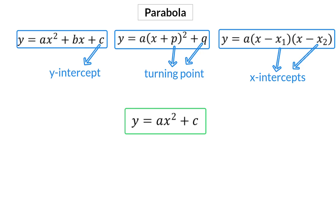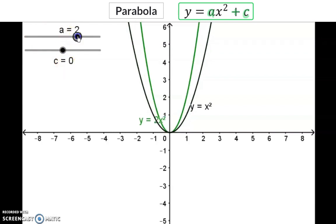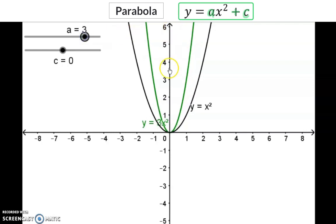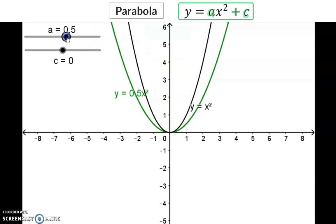We're quickly going to recap what transformations the a and c values indicate. Here we have the mother graph y equals x squared, with the a value being 1 and the c value 0. If we make the a value bigger, the arms of the parabola move closer and closer to the y-axis. When we make the a value smaller than 1, the arms move further away from the y-axis and become wider.